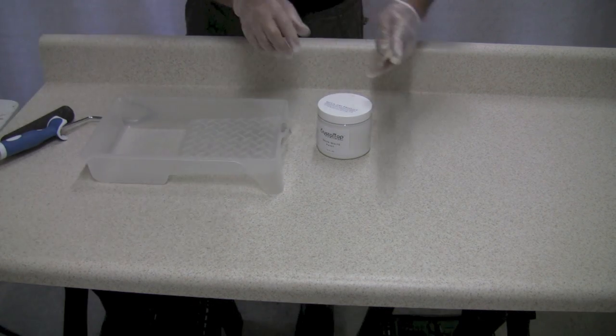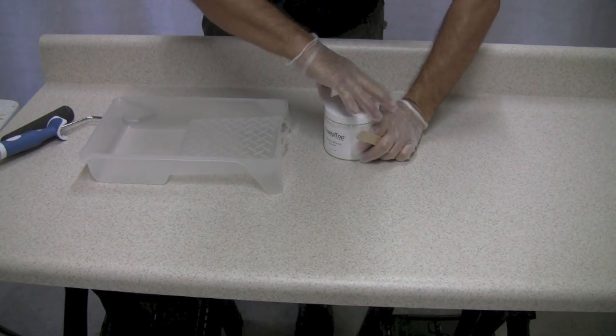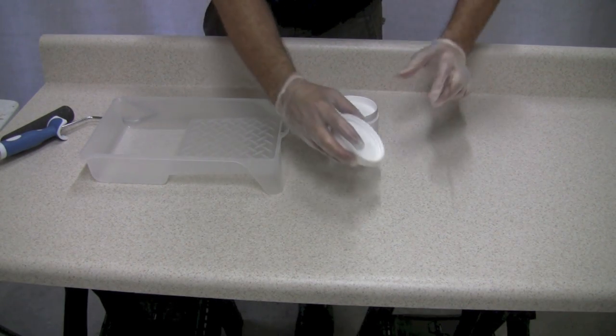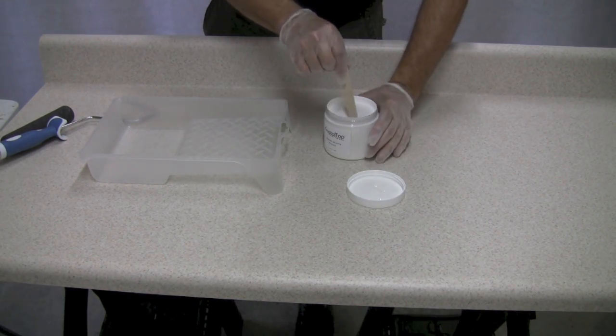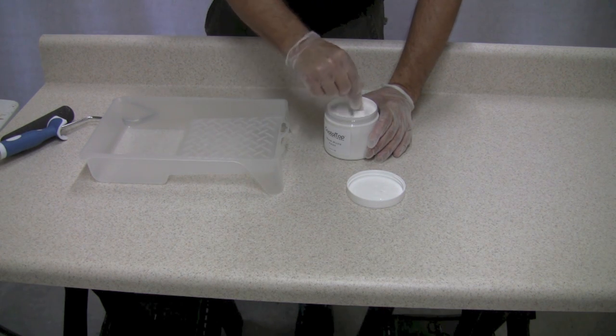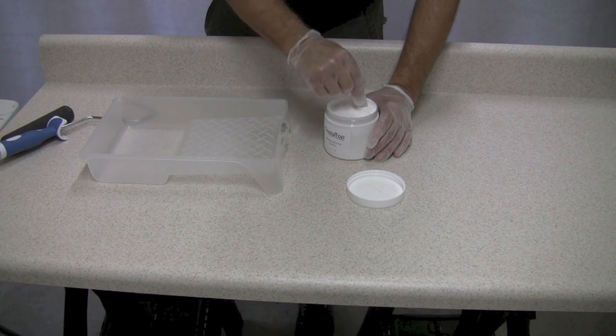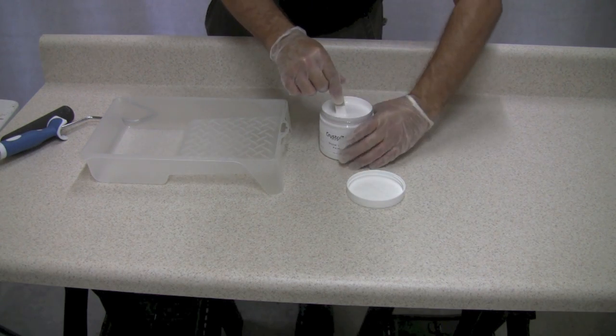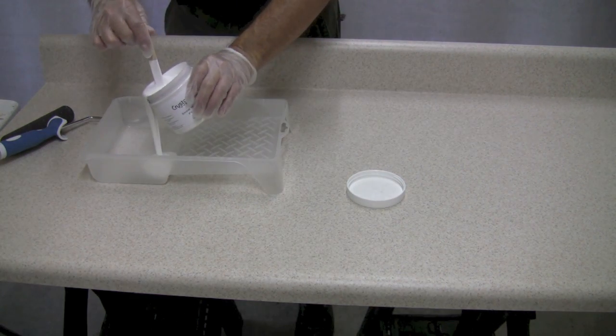You're going to want to make sure you have your vinyl gloves on, and then remove the lid from the paint. Make sure there's no film on top. If there is, you want to remove that using your stir stick, then slowly mix your paint and pour it into your paint tray.